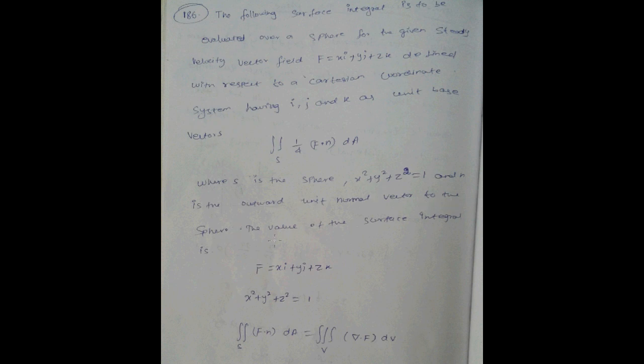The value of the surface integral: how to find surface integral value? f equal to xi vector plus yj vector plus zk vector, x square plus y square plus z square equal to 1.